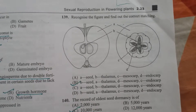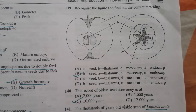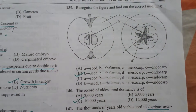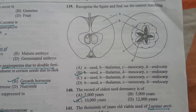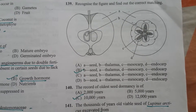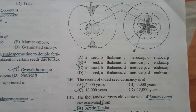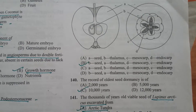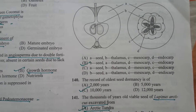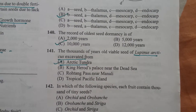Recognize the figure and find out the correct matching: B is seed thalamus, D is mesocarp, and C is endocarp. The record of the oldest seed dormancy is 10,000 years.